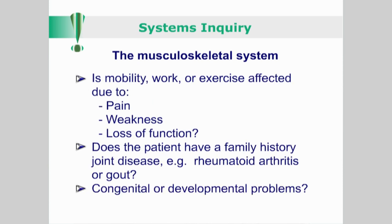Is mobility, work, or exercise affected due to pain, weakness, or loss of function? Does the patient have a family history of joint disease, for example, rheumatoid arthritis or gout? Were they affected by any congenital or developmental problems in childhood, including joint and limb deformities?